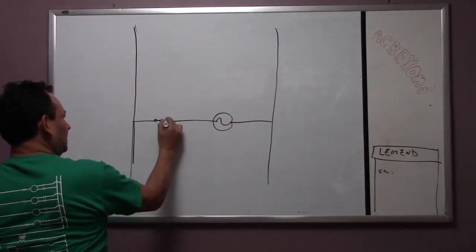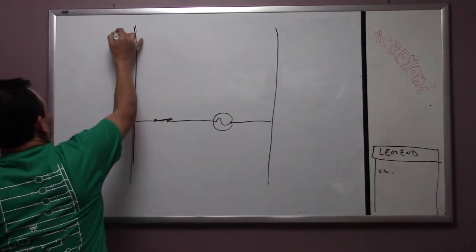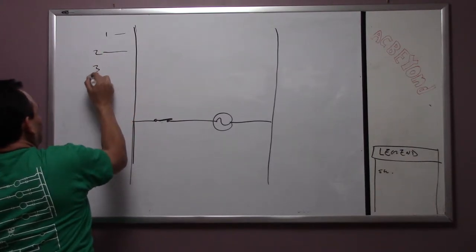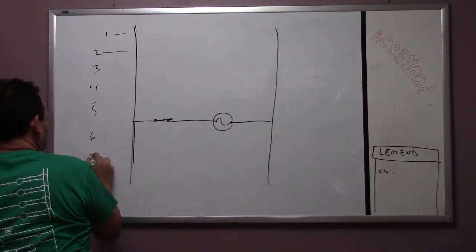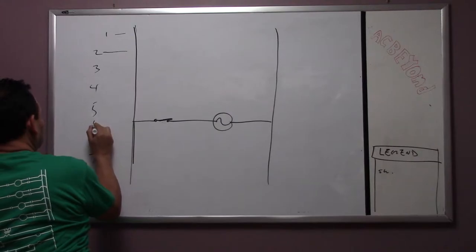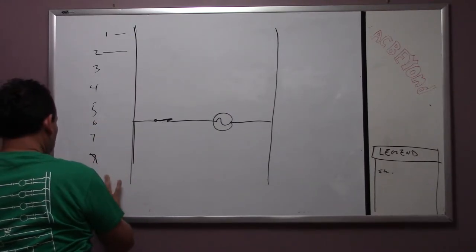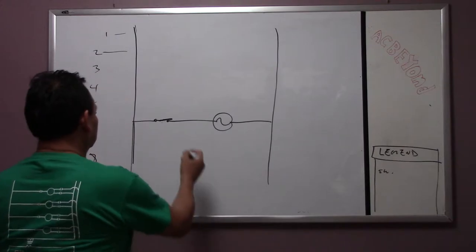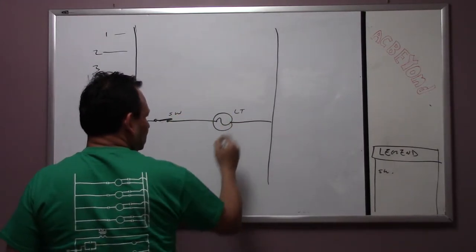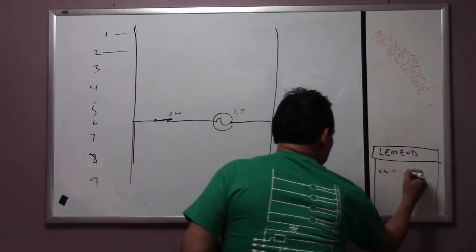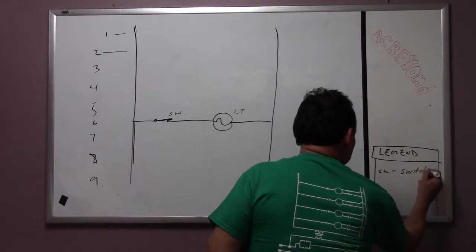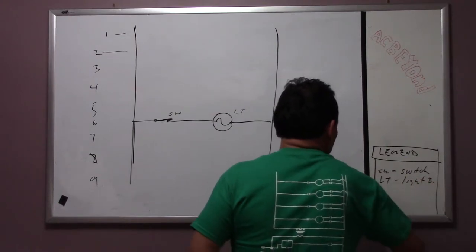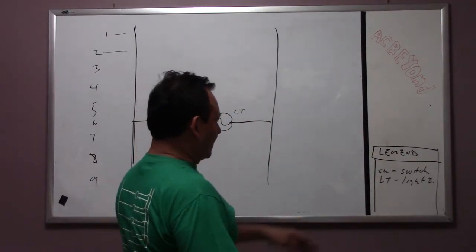The other thing I forgot to mention: let's suppose this component has a number — one, two, three, four, five, six, seven, eight, nine. Over here we're going to label this SW, and this one we'll put LT on it. Over here it's going to say this is a switch.